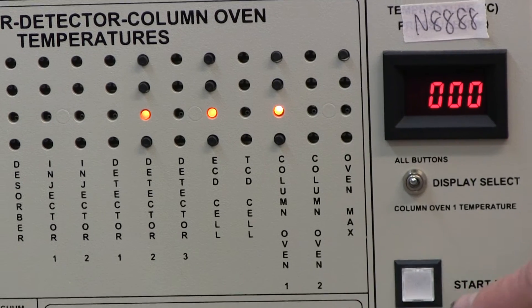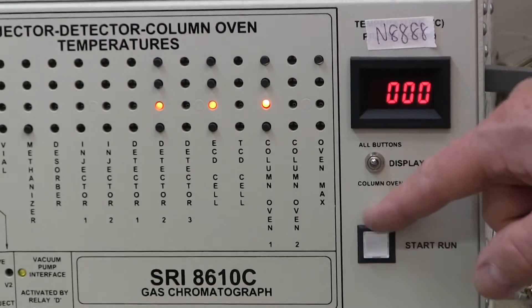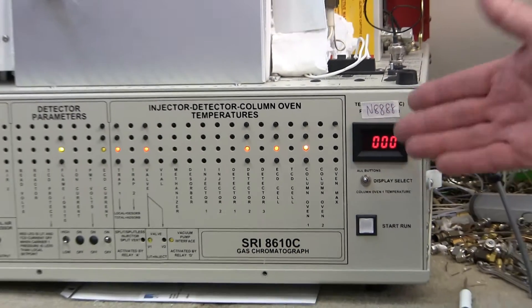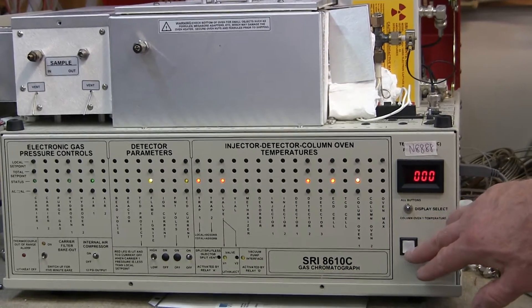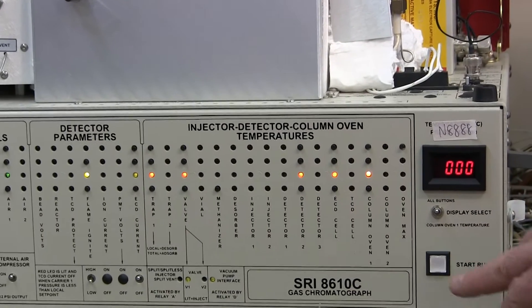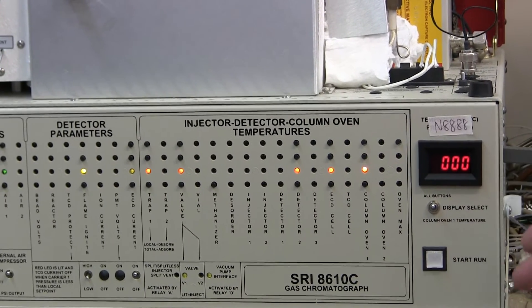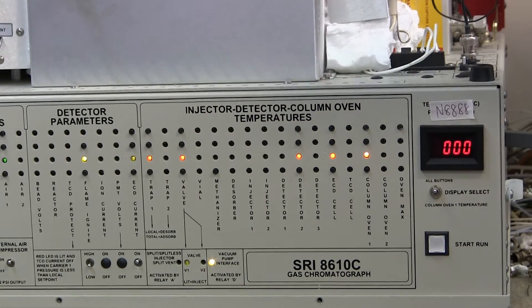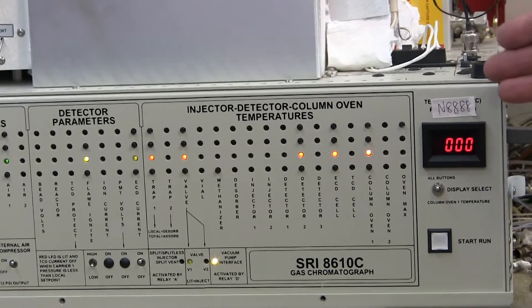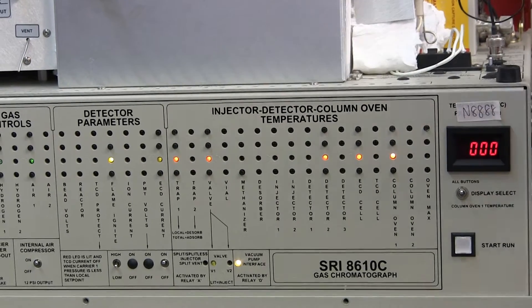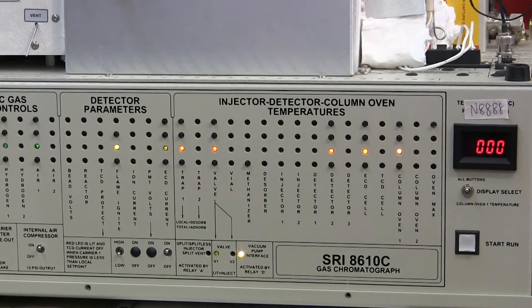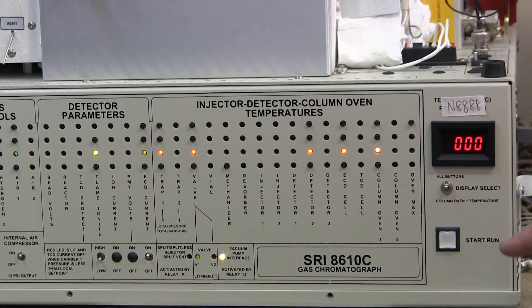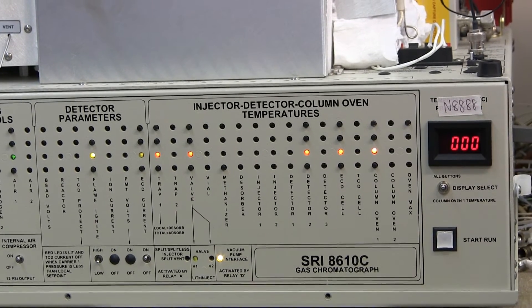Also on the front panel, there's a ready light. The ready light lights up once everything is equilibrated. You don't have to wait to start the analysis. You can start the analysis by pushing the start button any time, whether the light is lit or not. But when the light is lit, it means that the oven is at the set point temperature and has been for a minute without having any kind of excursion beyond one degree from the set point temperature.